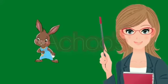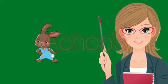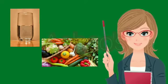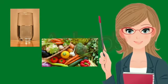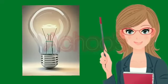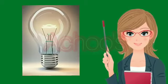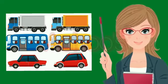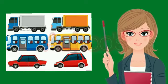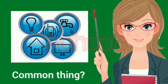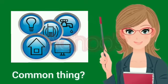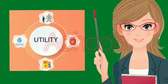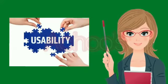Children, just look around you and you will find so many objects. For example, you may see water, vegetables, furniture, electricity or vehicles — so many things. Now tell me, what is that one thing that is common in these things? Well, that is utility or usability.